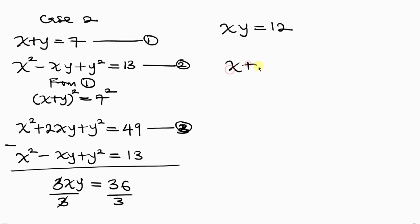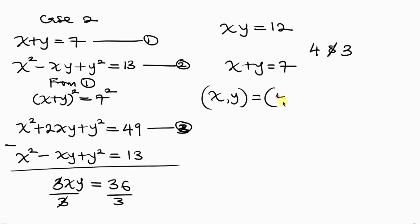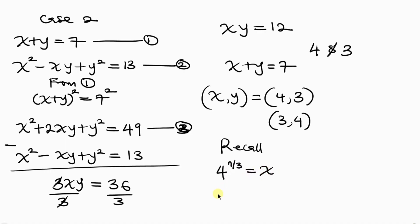From equation 1 we have x + y = 7, and we just found xy = 12. What factors add up to 7 and multiply to give 12? The answer is 4 and 3: 4 × 3 = 12 and 4 + 3 = 7. So x = 4, y = 3, or x = 3, y = 4, since the equation is symmetric.